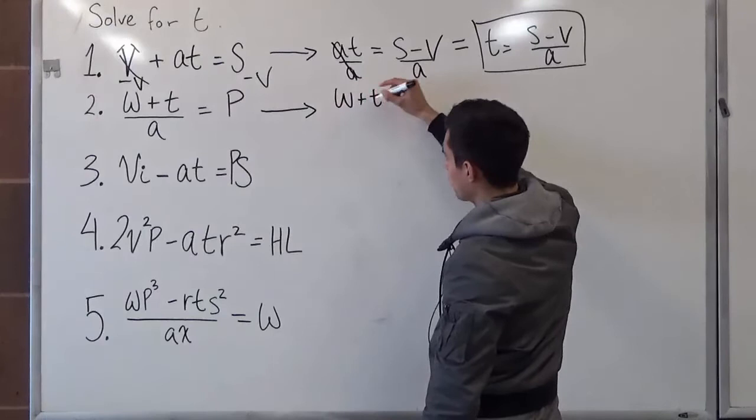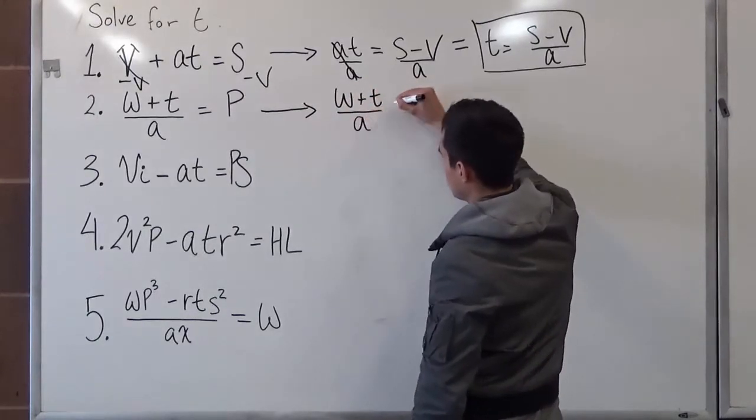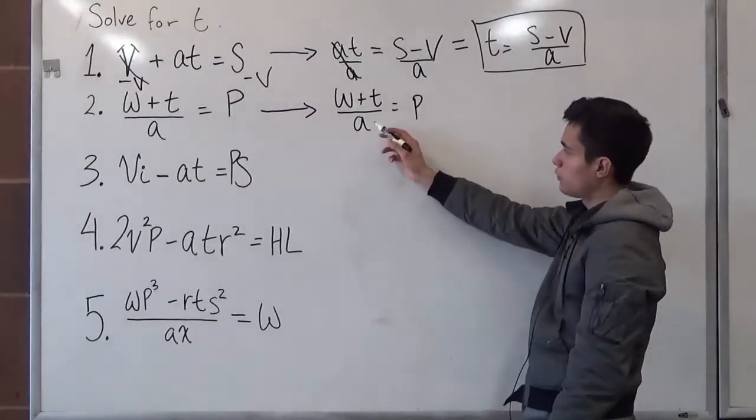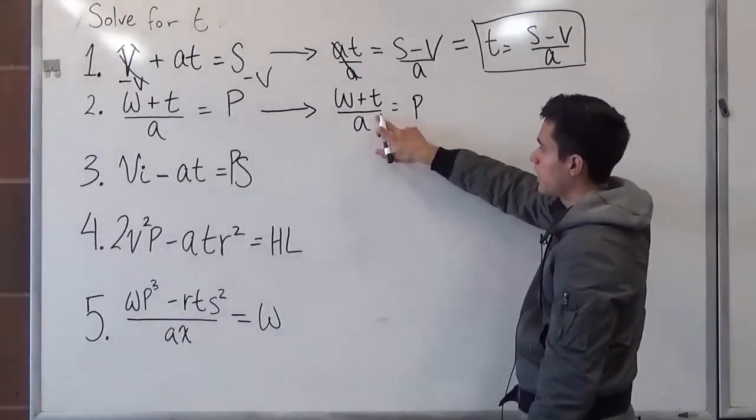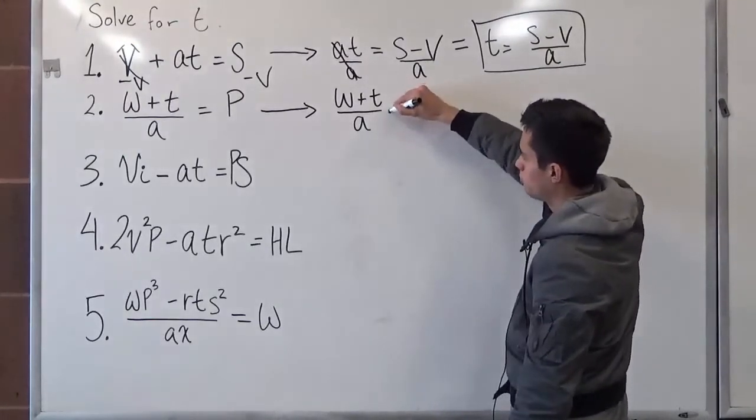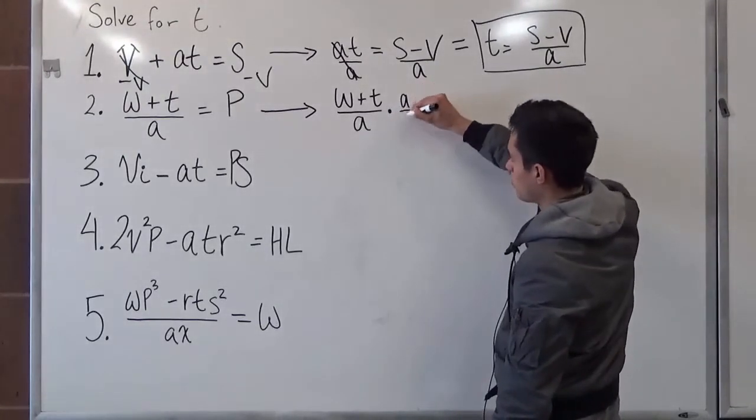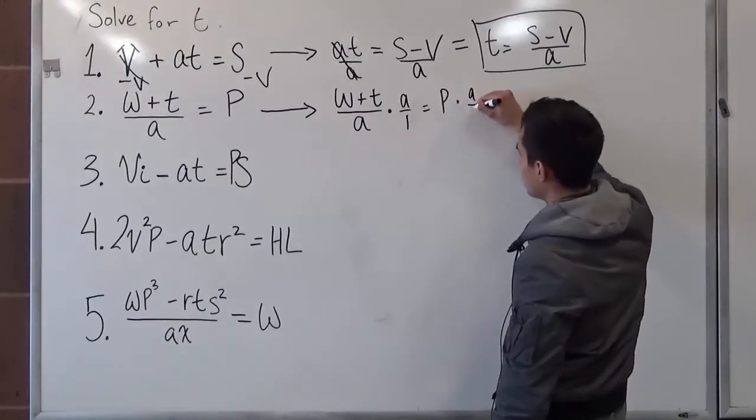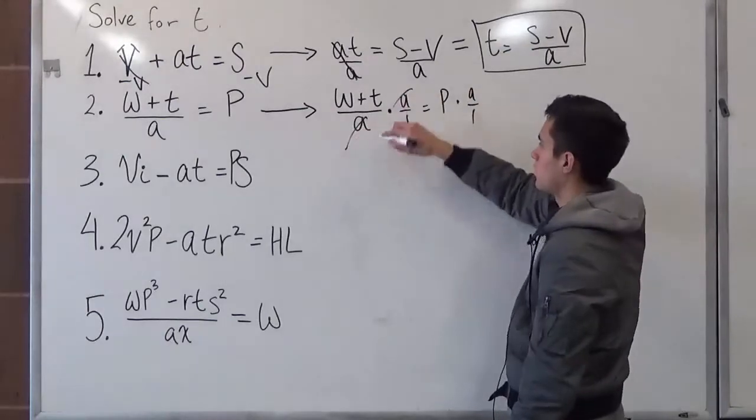So we set up our equation, and now to move this on that side, we have to multiply it, because it's being divided. So here it can basically mean times a over 1 is equal to p times a over 1. This cancels out.